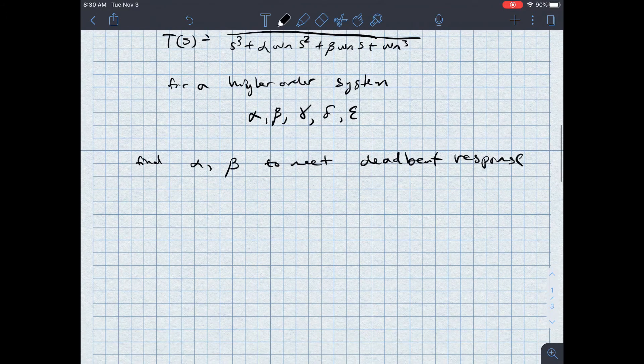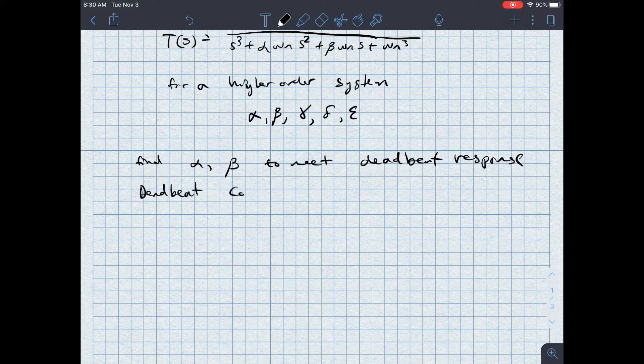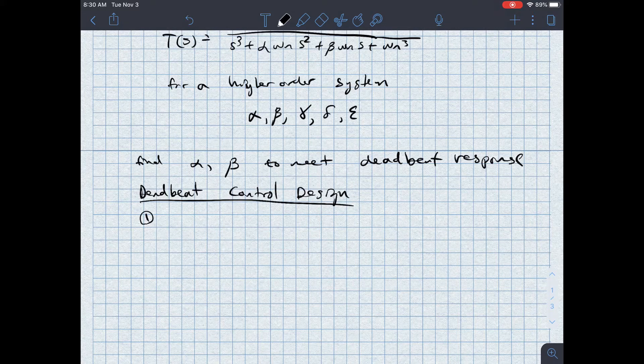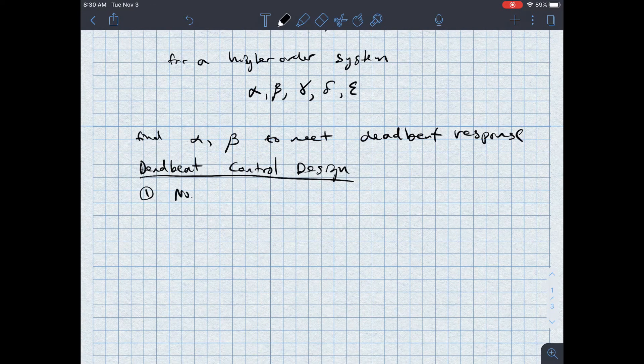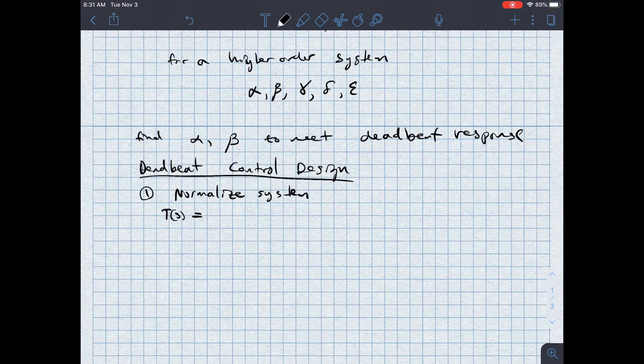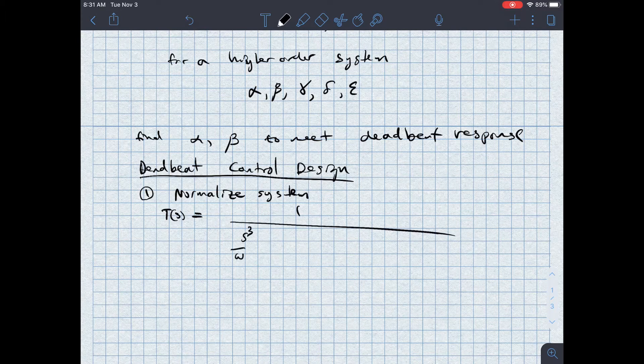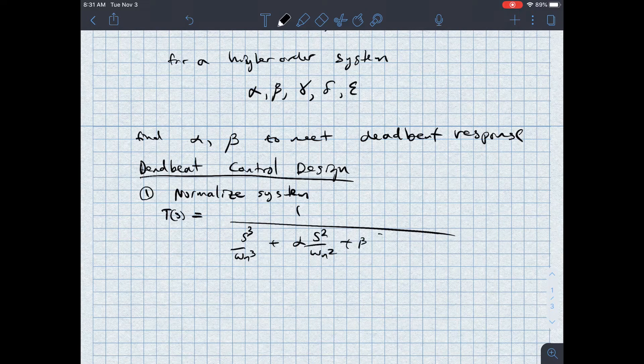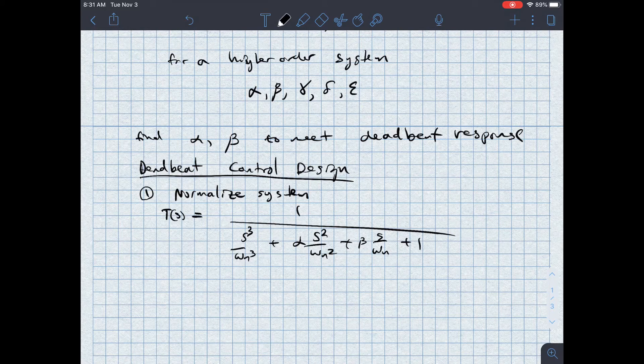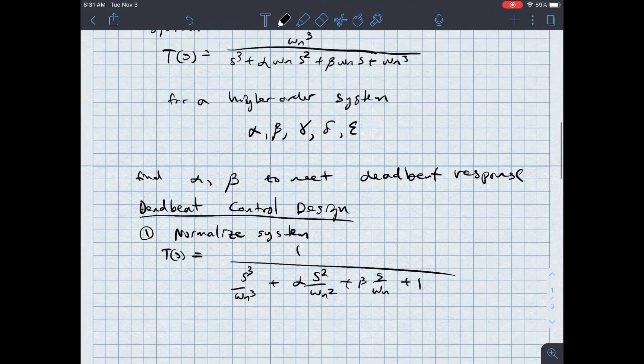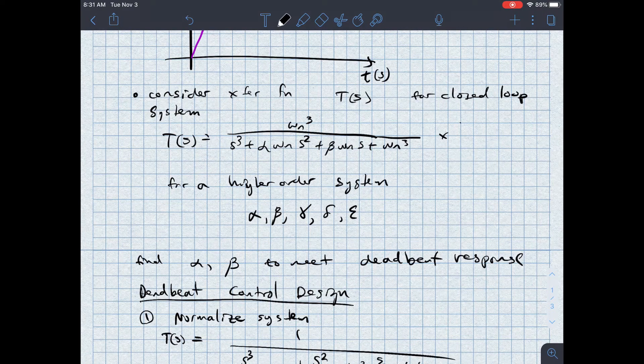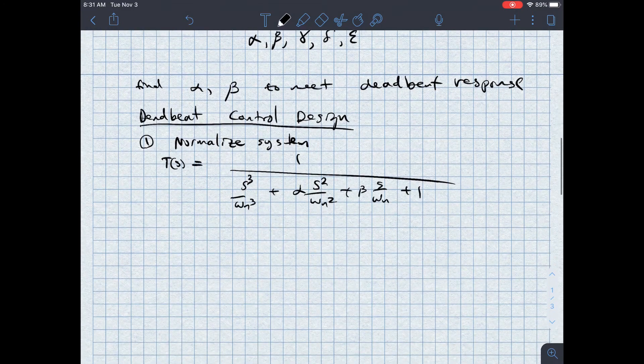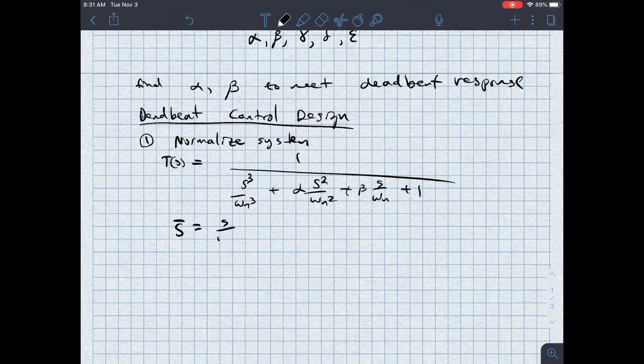Here's the steps for deadbeat control design. Step number one is to find the overall system transfer function, but then I'm going to normalize it. With T of S, I'll have 1 over S cubed omega N cubed plus alpha S squared over omega N squared plus beta S over omega N plus 1. So I'm multiplying by 1 over omega N cubed over 1 over omega N cubed. I'm normalizing the system, and then I'll use S bar is equal to S over omega N.